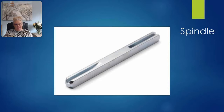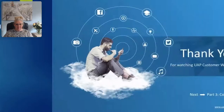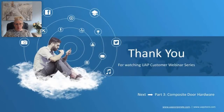Inline handles have levers at the same height internally and externally and are used with a solid spindle. Offset handles have different lever heights and can be used with dual spindle locks. The escutcheon is a protective or ornamental plate used around a keyhole or handle. Thank you for watching Episode 2 on composite door locks. Part three will cover composite door hardware.